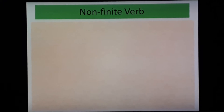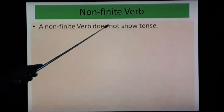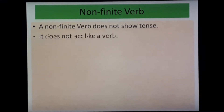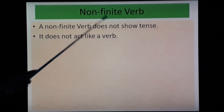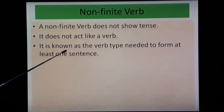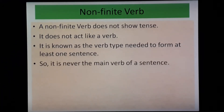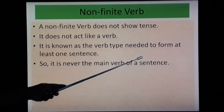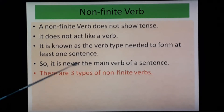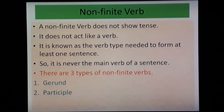Let's start our part 2 with non-finite verbs. A non-finite verb does not show tenses. It does not act like a verb. It is known as the verb type needed to form at least one sentence, so it is never the main verb of a sentence. There are 3 types of non-finite verbs: first, gerund; second, participle; and third, infinitive. We are going to see each one of them in detail.